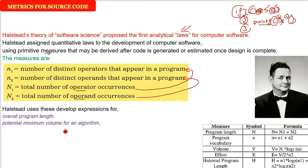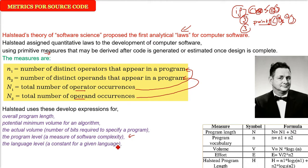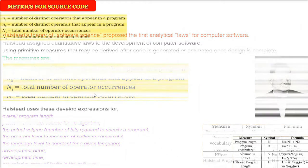Halstead used these parameters to develop expressions for the overall program length, potential minimum volume for an algorithm, the actual volume in bits, the program level or complexity, the language level which is constant for languages like COBOL or C or C++, development effort, development time, and the projected number of faults or errors.